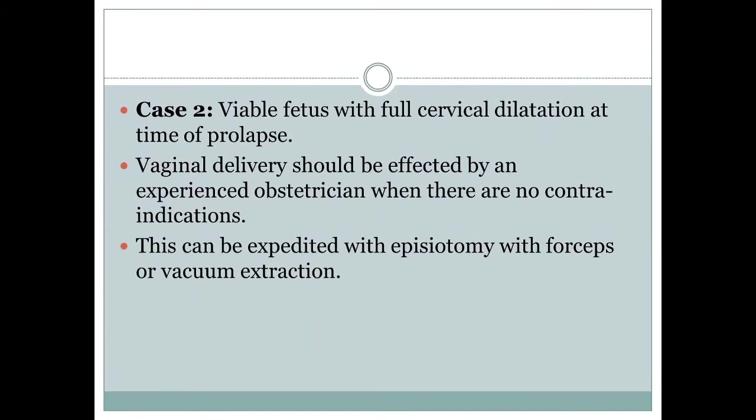Case 2: Cord prolapse with a viable fetus with full cervical dilatation at the time of prolapse. Vaginal delivery can be allowed to progress in the presence of an experienced obstetrician and where there are no contraindications to vaginal delivery. This can also be expedited with episiotomy, forceps, and even vacuum extraction.